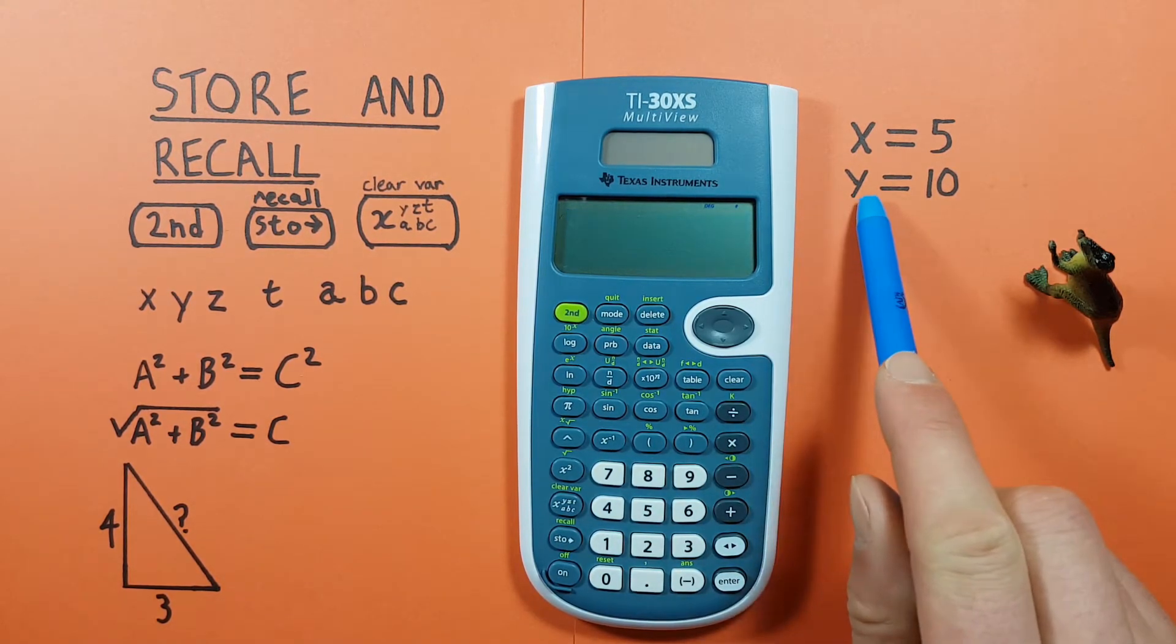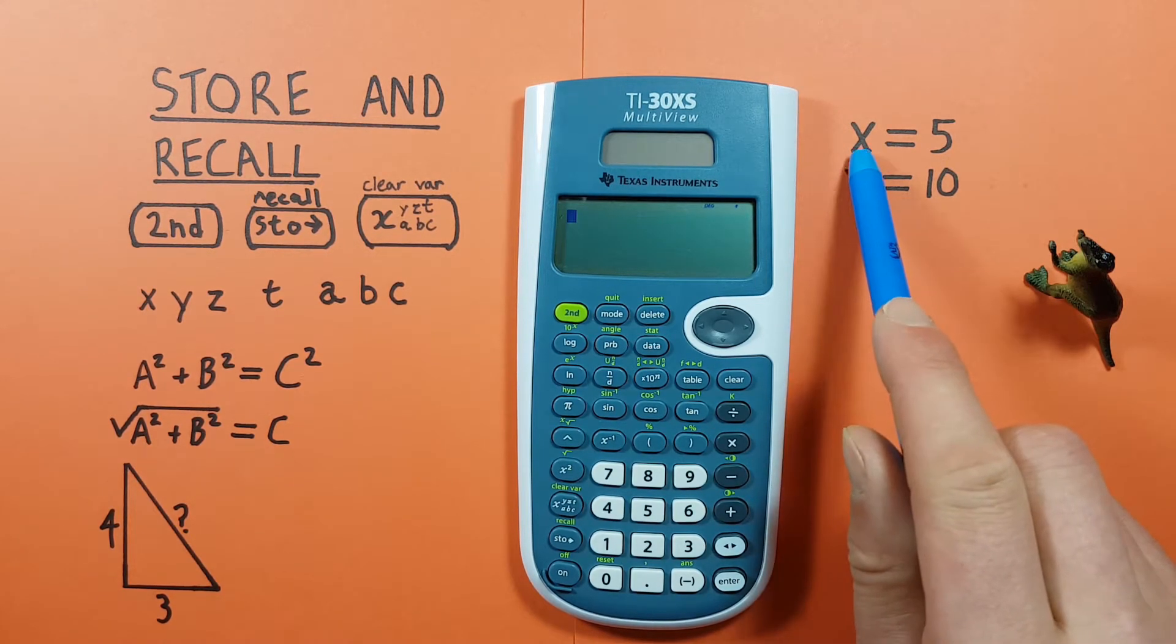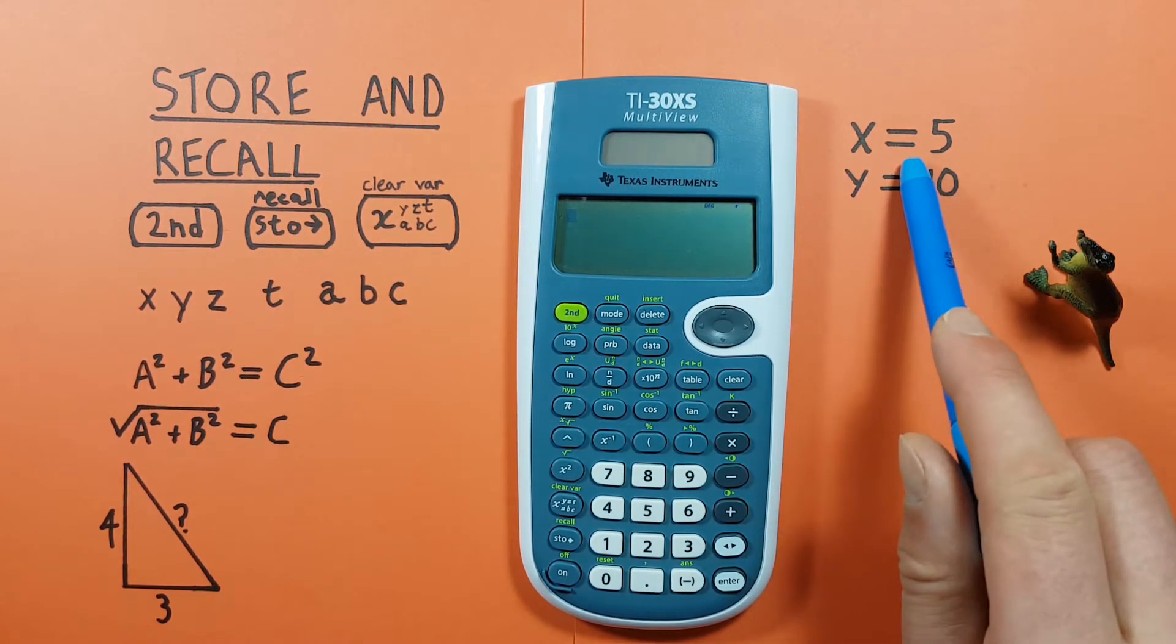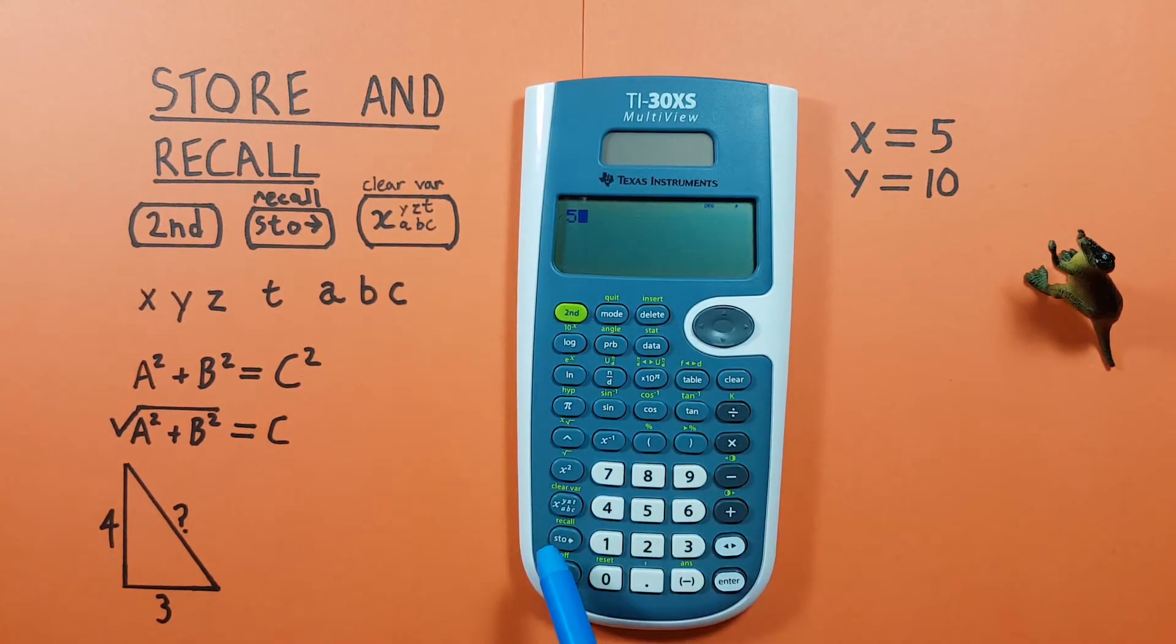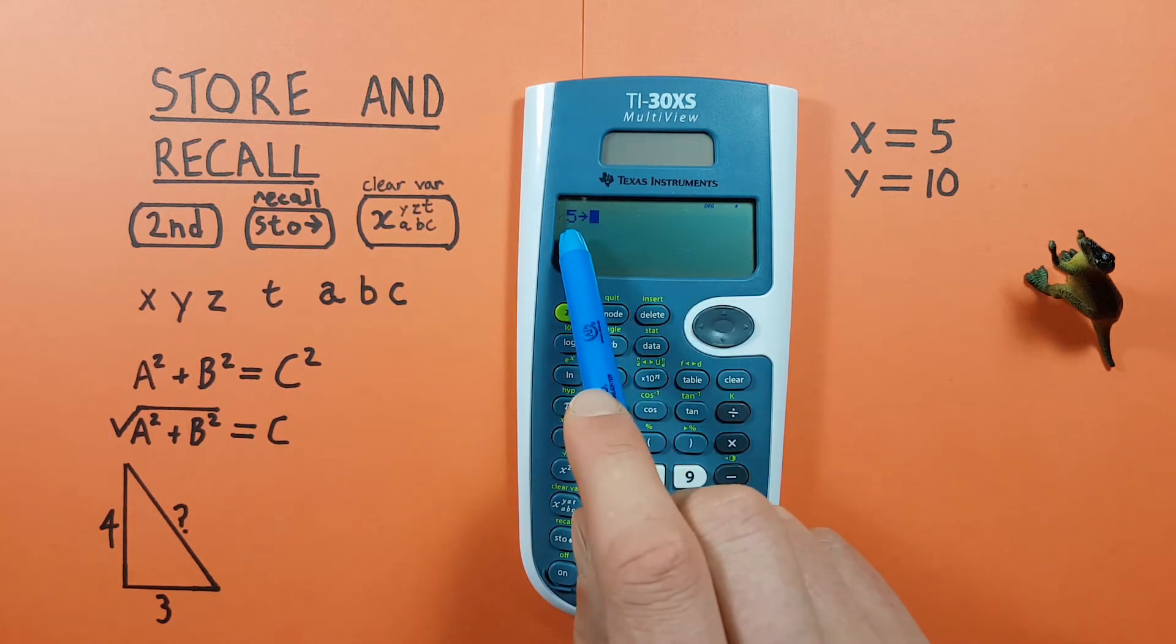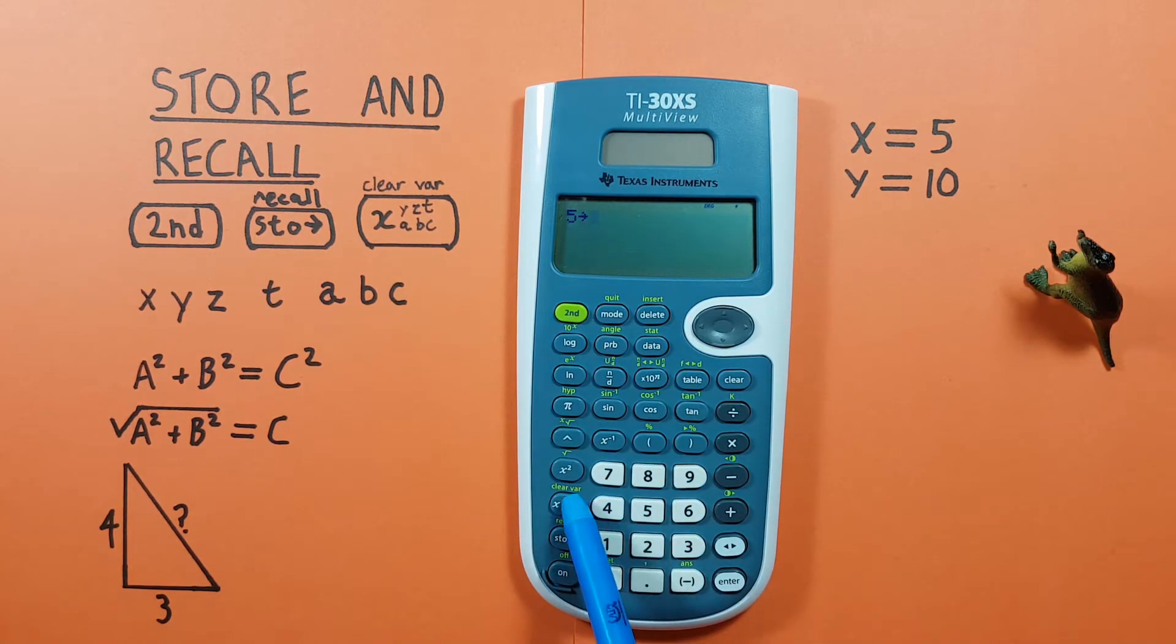We'll use these examples to show how to store something in the memory slot. So we'll put 5 in the X memory slot. To start we press the 5, put it on our screen, and then press the STO or store key. We then see an arrow appear pointing to the right, and then we press the memory slot key to cycle to the memory slot we wish to use.